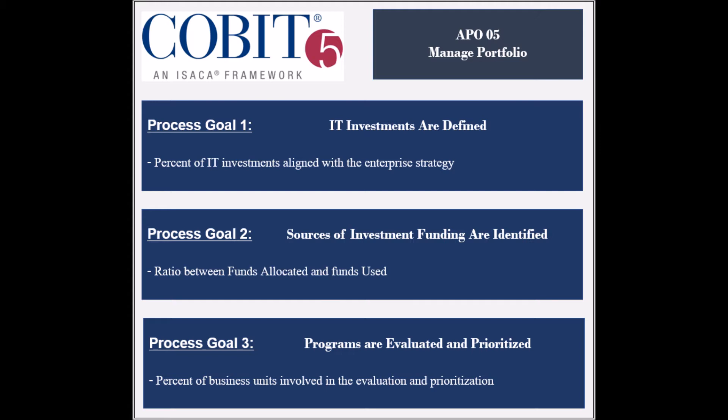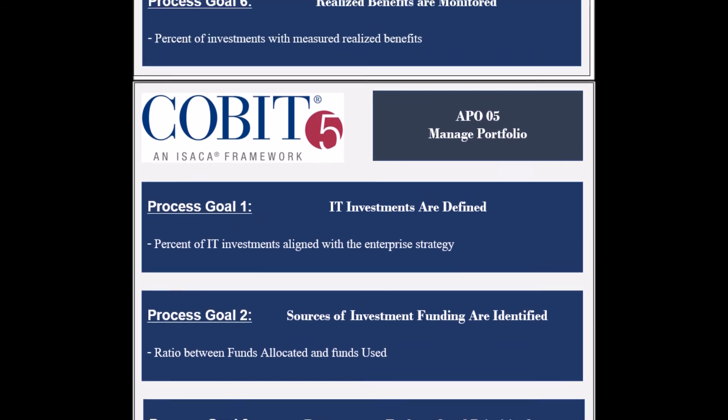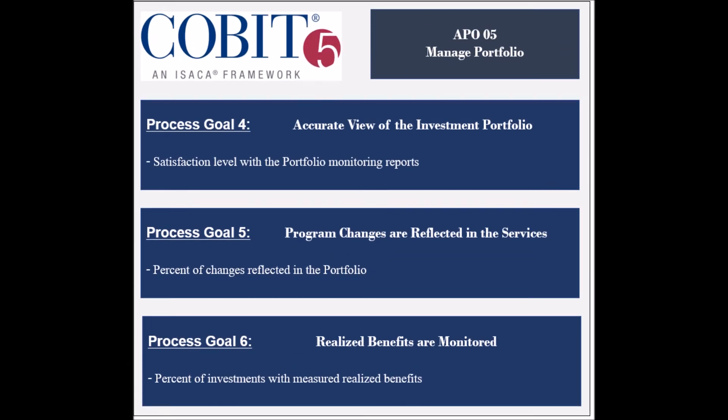The third goal is to prioritize IT programs before allocating funds, and its achievement is measured by the percent of business units involved in the prioritization process. The fourth goal is to ensure that an accurate view of the investment portfolio exists, and its achievement is measured by the satisfaction level with the portfolio monitoring reports.